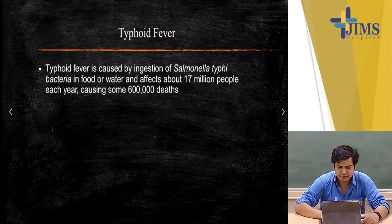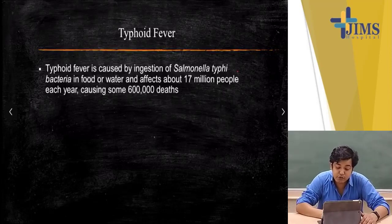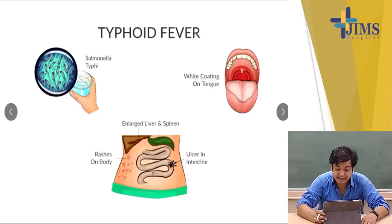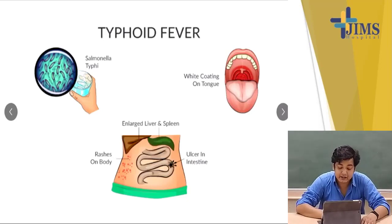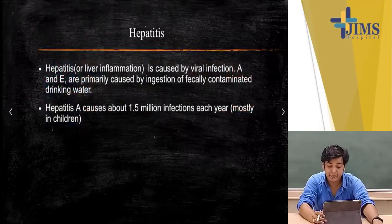Typhoid fever is caused by ingestion of Salmonella typhi in food or water and affects around 17 million people each year, causing around 600,000 deaths. Signs include white coating on the tongue, rashes on the body, enlarged liver and spleen, and in some cases ulcers in the intestine.